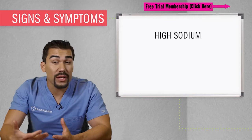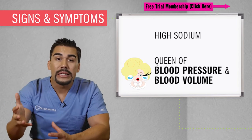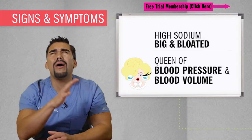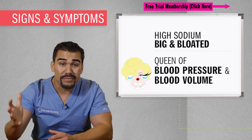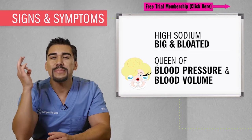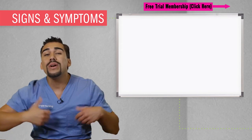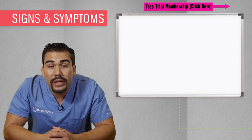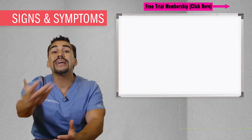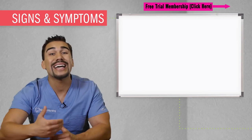So what's going on in hypernatremia? Well, high sodium — and since sodium is the queen of blood pressure and blood volume, everything in the body is going to be big and bloated. Before you start memorizing all these signs and symptoms and have a meltdown reconsidering your career choice, let's make this simple and focus on what the test will ask you. The test is going to ask priority signs and symptoms — who are you going to assess first? We're going to go from mild to severe signs and symptoms, also known as nursing assessments.